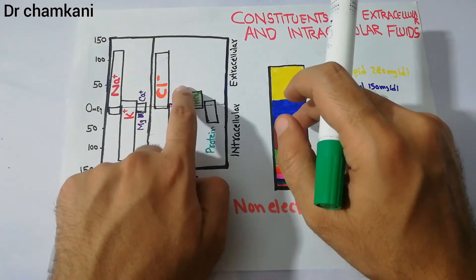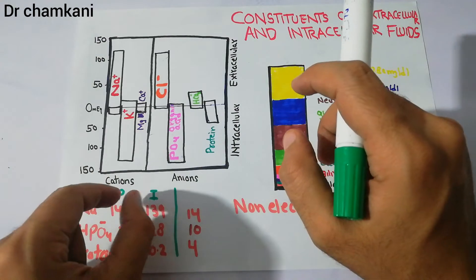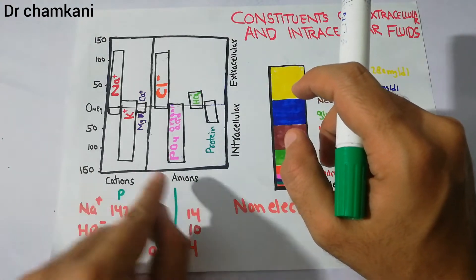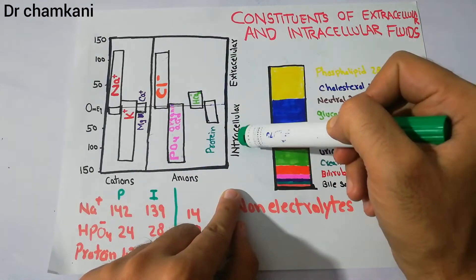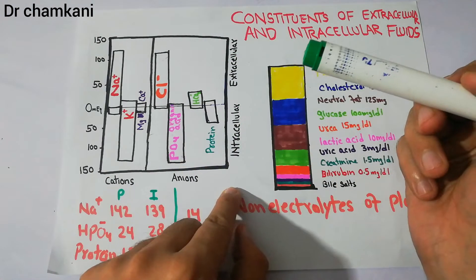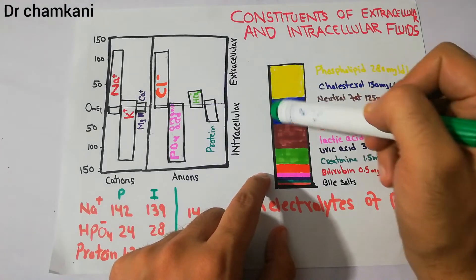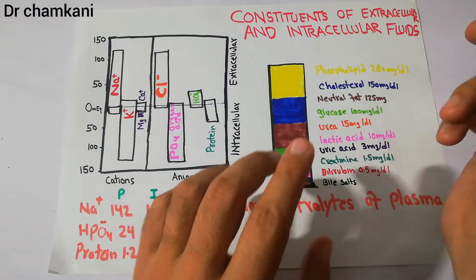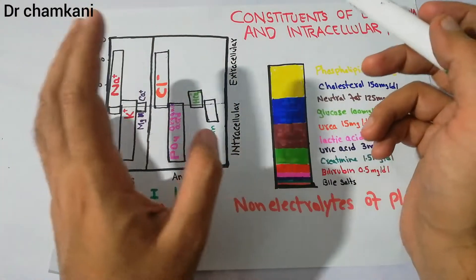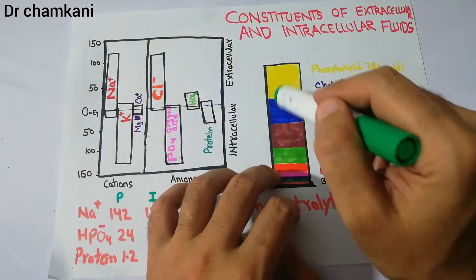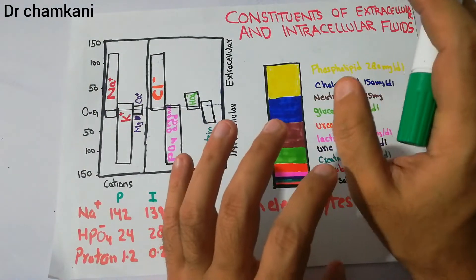We have two diagrams. One is basically showing the ions — the cations and the anions — in the extracellular fluid and the intracellular fluid. The other diagram is showing the known electrolytes of the plasma — these are the ions or the electrolyte substances present in the plasma.